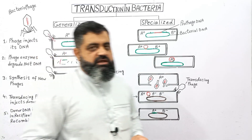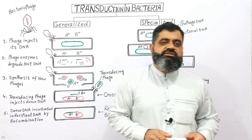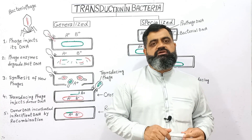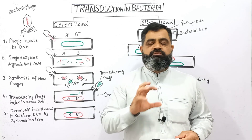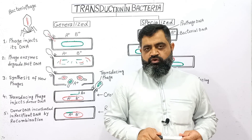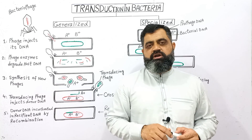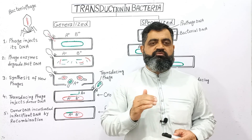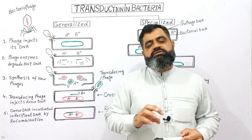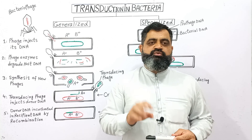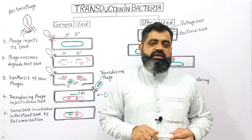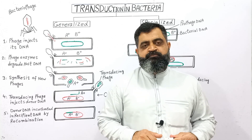There is a third type of transduction known as restricted transduction. In this process, usually RNA viruses are involved, and they transfer DNA or RNA molecules from one organism to another. This type of transduction usually causes tumors in animals, and these tumors can lead to cancer.